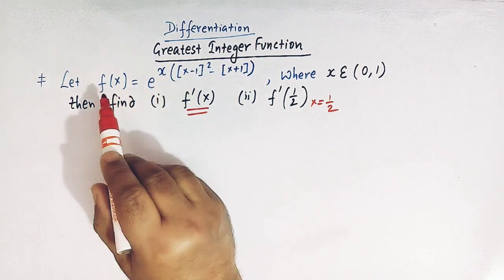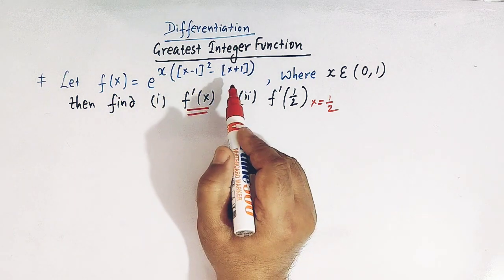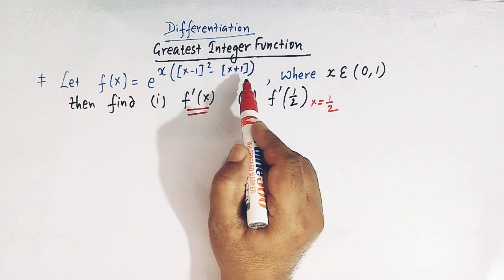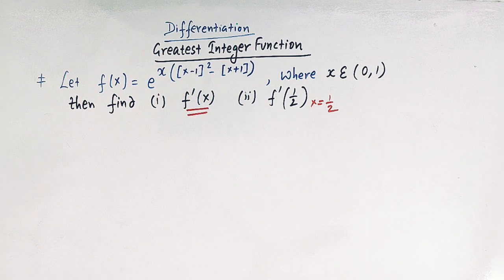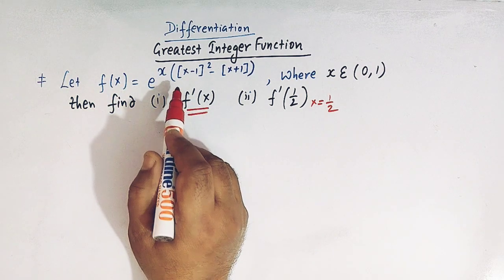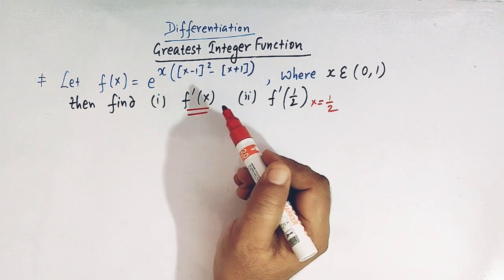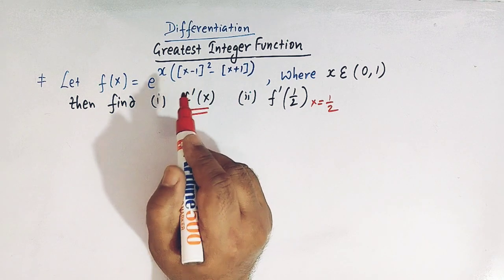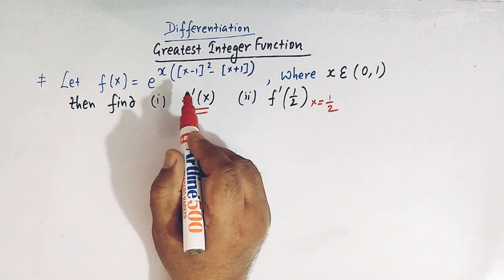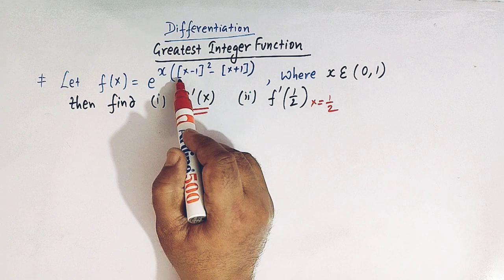The function involves the greatest integer function, so this problem is going to be very useful for beginners. We will see the concept of greatest integer function and how to simplify expressions containing it. Whenever we come across problems of this type — with greatest integer function, signum function, fractional part function, or absolute value function — we first try to simplify the function by taking help of the particular type of special function involved.